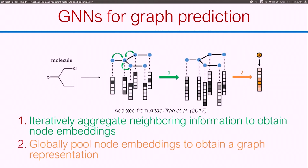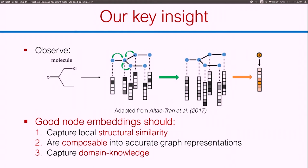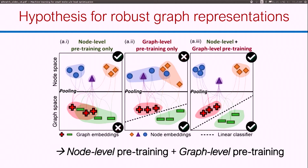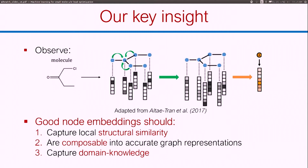Our insight is that if you trace how the neural network makes these predictions, it kind of depends on having good node embeddings that are able to capture local structure similarity and can be pooled together to form graph representations that summarize the graph well. Because we operate on real objects — molecules, not just abstract graph objects — we also want to capture some domain information. Our hypothesis is that we need to differentiate between graph-level and node-level pre-training. A node-level pre-training uses the node embeddings to make a prediction, whereas a graph-level pre-training technique uses the final aggregated representation.